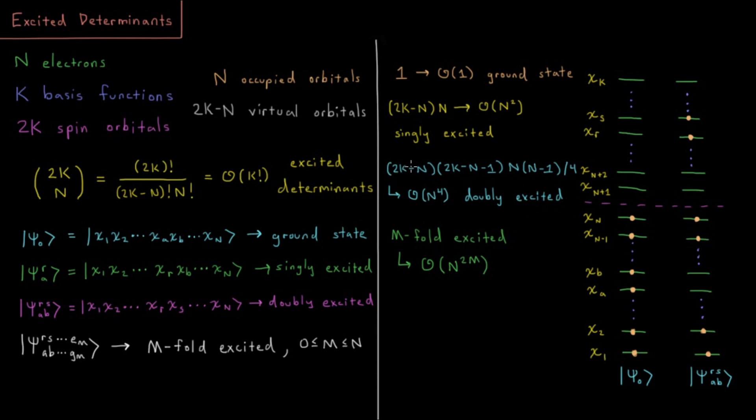And you can see that this exercise is showing that very quickly you get a dramatic increase in the number of available excited determinants at a level of excitation. So in general, if you do some m-fold excitation, you're going to have on the order of n to the 2m of those to be available.